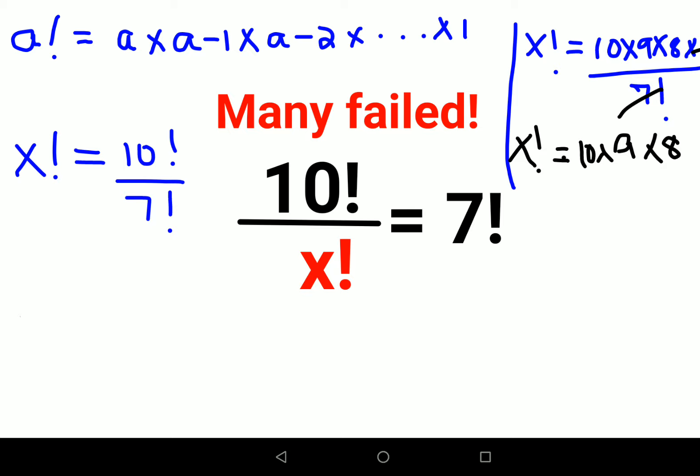So here x factorial is: instead of 10 we can write 2 into 5, instead of 9 we can write 3 into 3, and instead of 8 we can write 4 into 2. We're trying to write everything in terms of factorial.